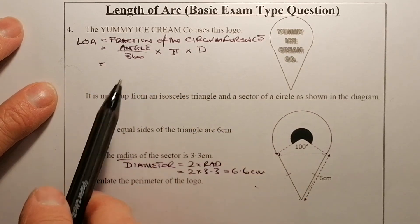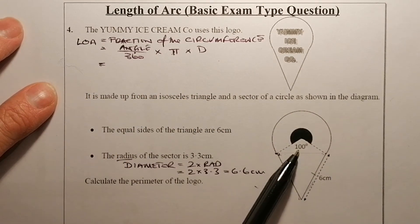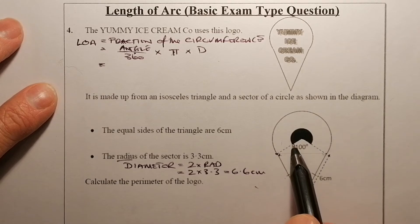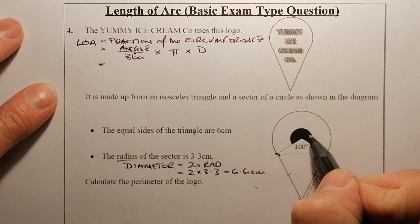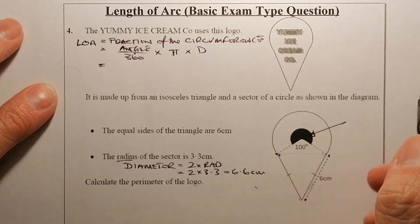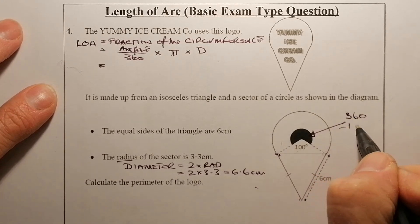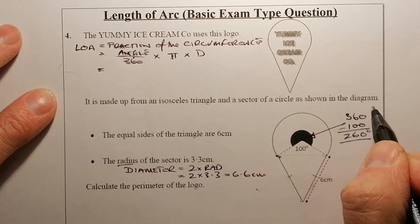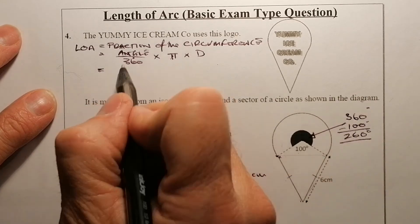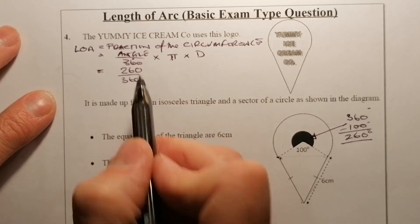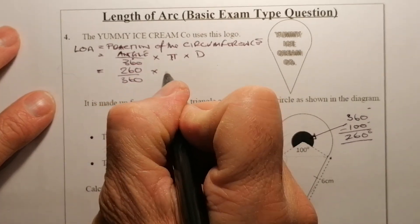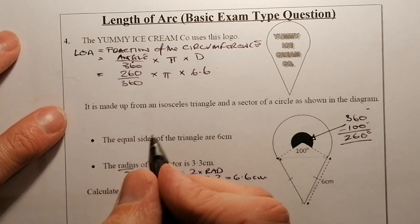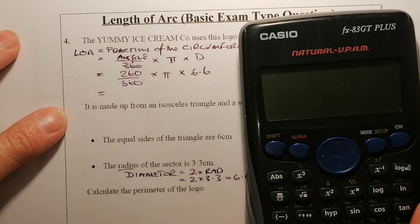Substituting values in: the angle is not going to be 100 degrees, because the 100 degrees is the minor sector — not the major sector we need. To find the correct angle, we take 360 minus 100, which gives 260 degrees remaining. So the angle I'm going to use is 260 over 360, multiplied by pi and by the diameter of 6.6. Remember, diameter must be used here.